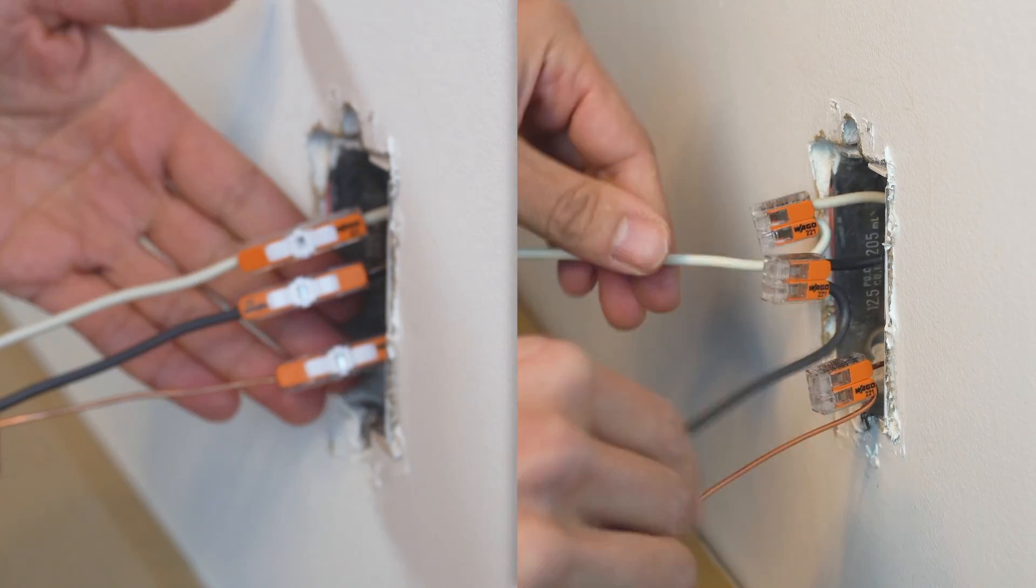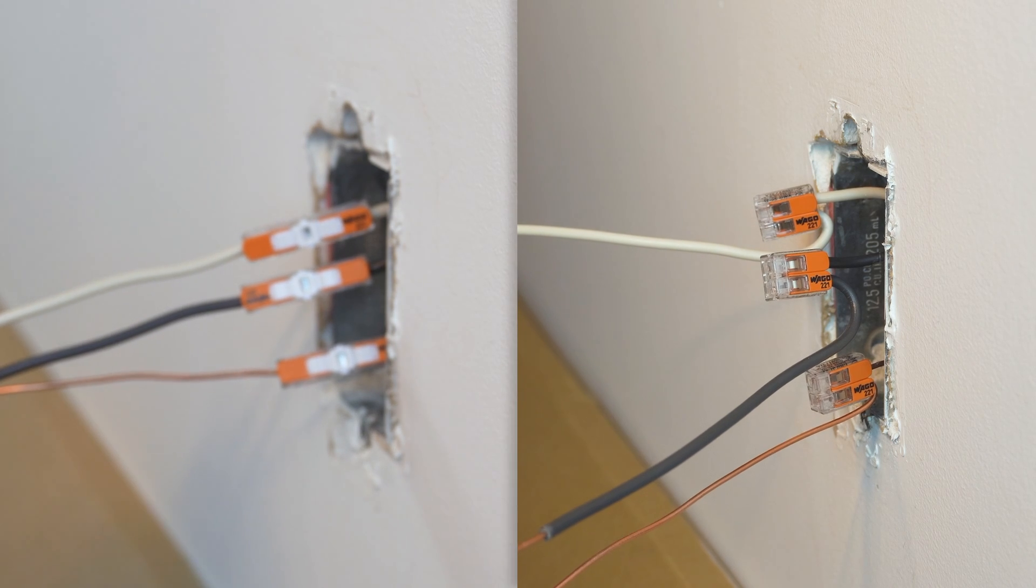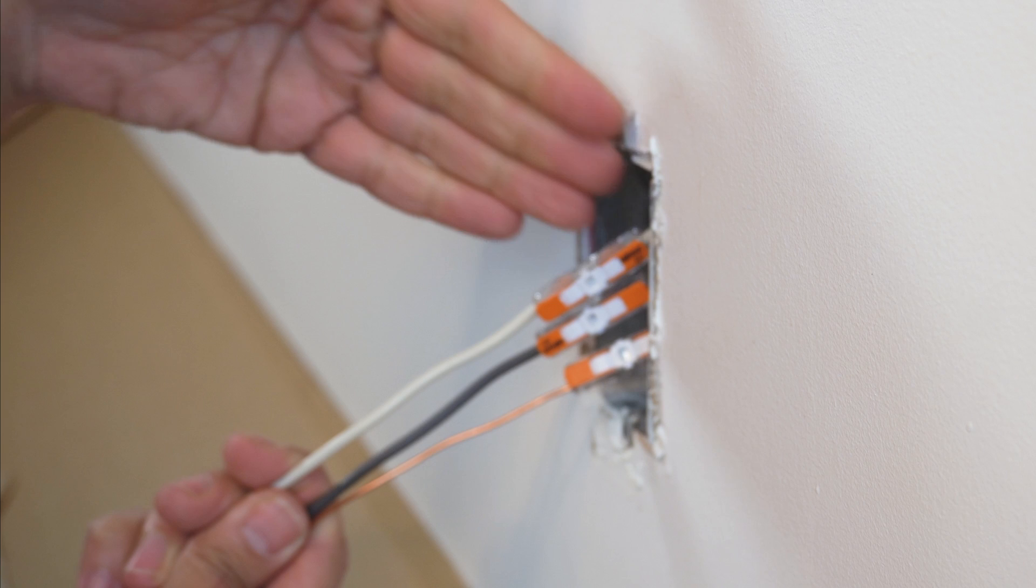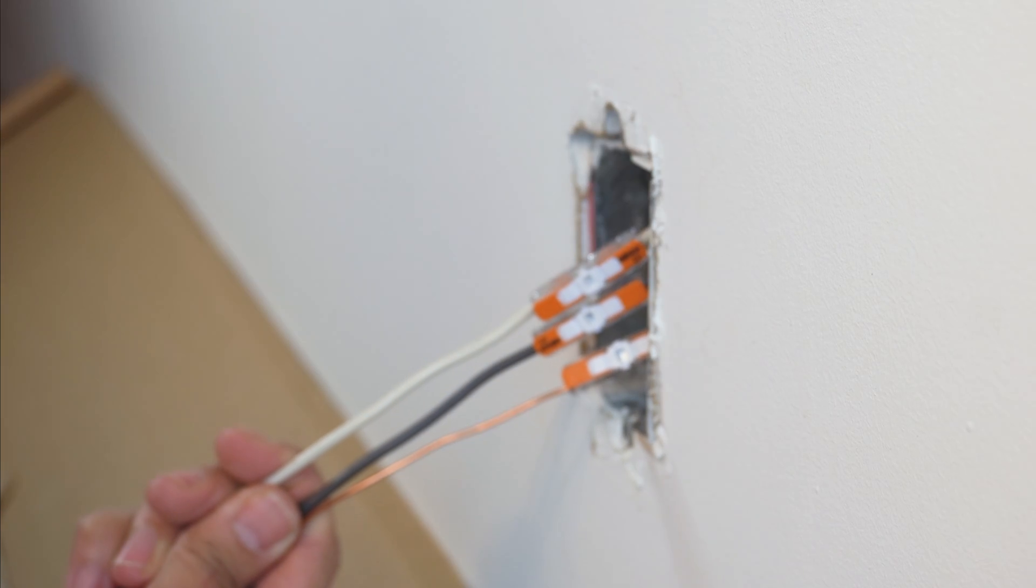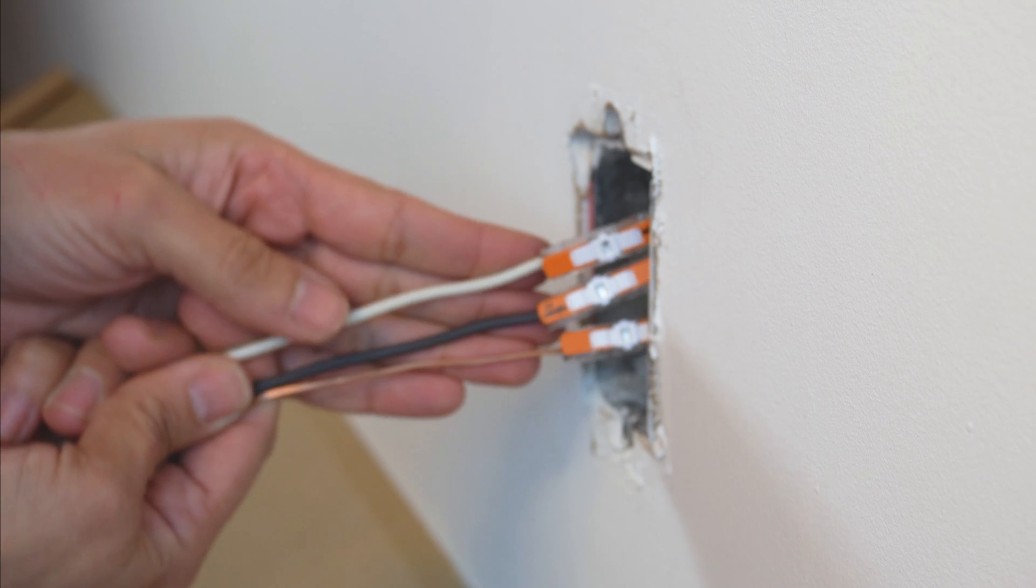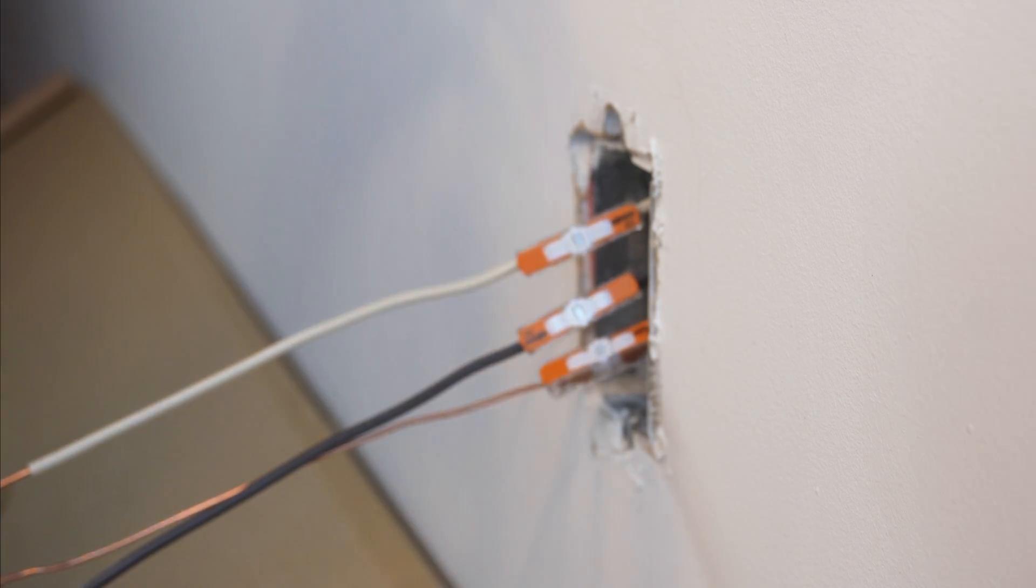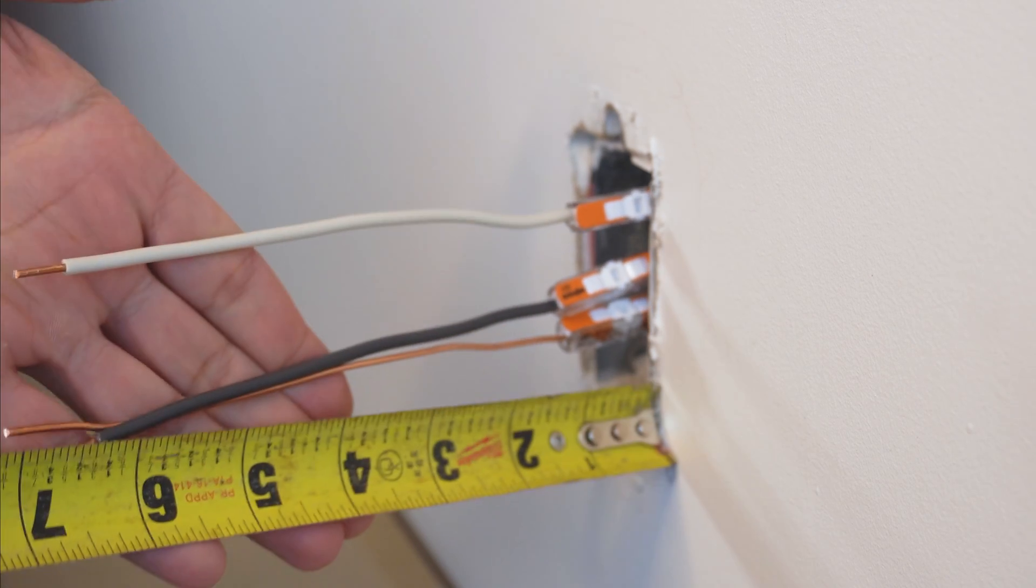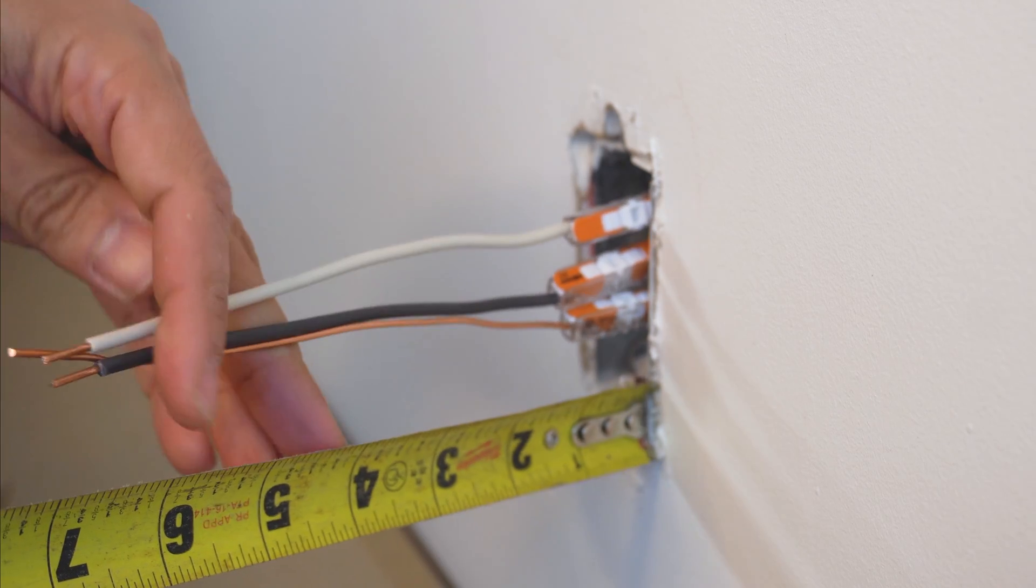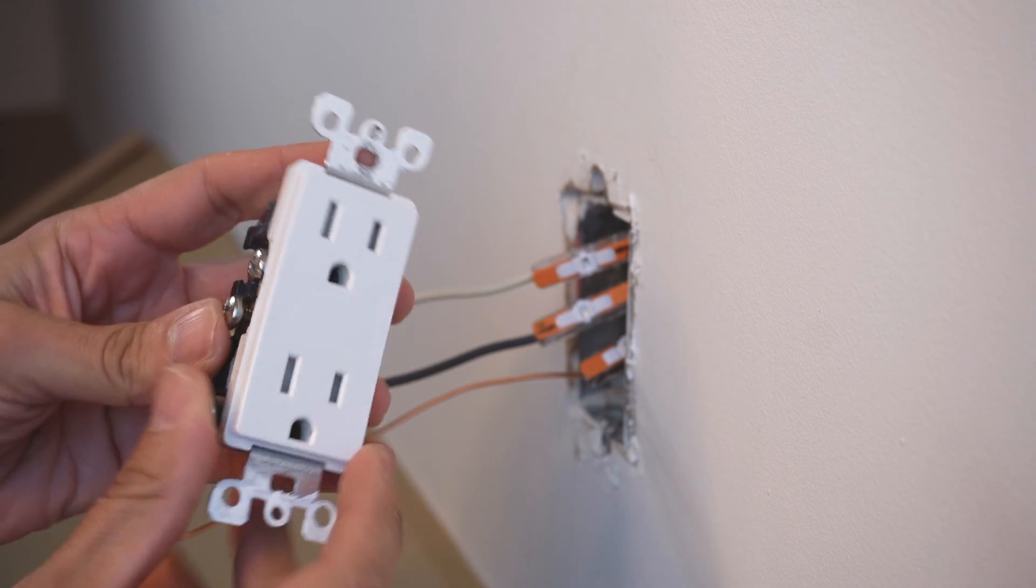Now, can you see the difference here between the inline connector and the WAGO lever connectors? These occupy a lot less space. I like how the directionality stays the same with the wire. It doesn't loop back. It's a good, nice, clean installation. And now we're going to take our tape and you can see that that is extending a good distance away from the drywall. Looking good. And now we can install our receptacle.